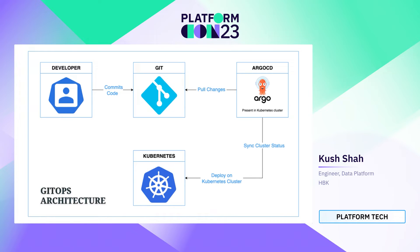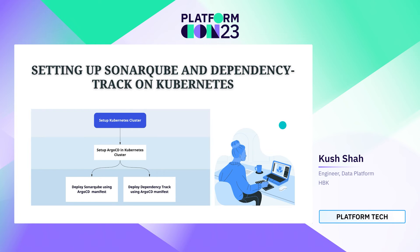This is the GitOps architecture where ArgoCD works on a pull-based mechanism. Its job is to ensure that whatever infrastructure-as-code manifest files are added in the GitHub repository, it pulls those files from GitHub and deploys them as applications on the Kubernetes cluster. The first step is setting up the Kubernetes cluster, then setting up ArgoCD in the Kubernetes cluster, and then deploying SonarQube and Dependency Track using ArgoCD manifests in the GitHub repository.